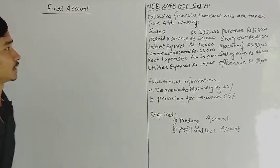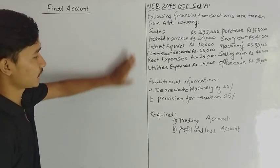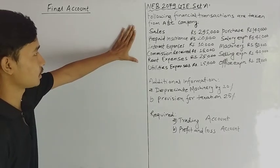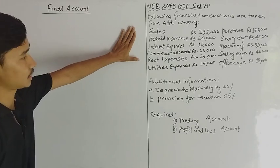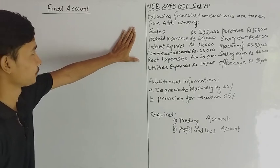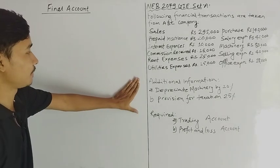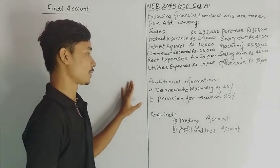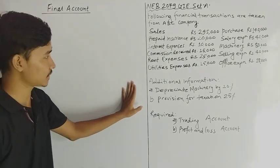If you want to make an account, you can make an account with additional information, and you can make a depreciation and provision for tax adjustment.